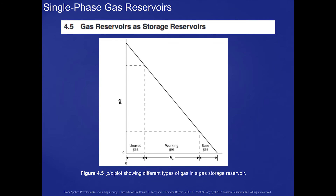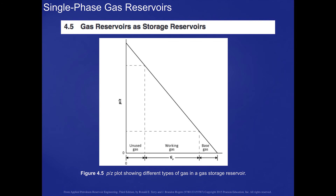The only mechanism operating is the gas drive discussed earlier. In these depleted gas reservoirs used as gas storage reservoirs, a plot of P over Z versus G sub P is used. If we produced down to a reservoir pressure of zero, that represents the base gas. During summer months, gas is injected back into the reservoir, moving back up the P over Z plot to the point referred to as the unused gas. During winter months, production draws down from that level, yielding the working gas available from the reservoir.